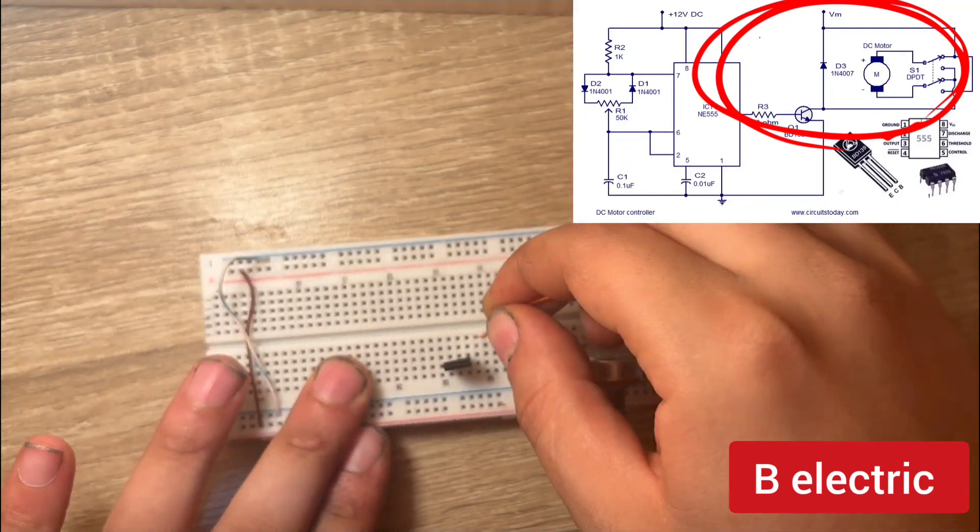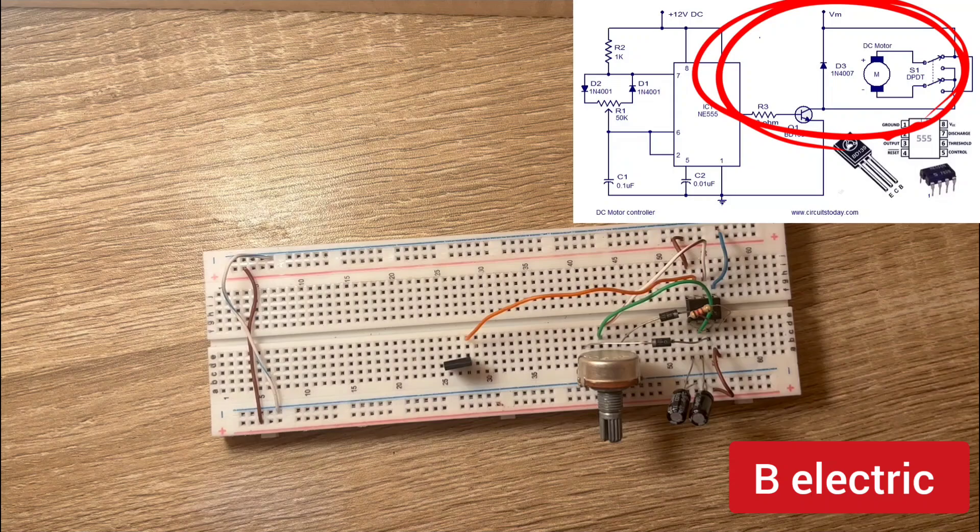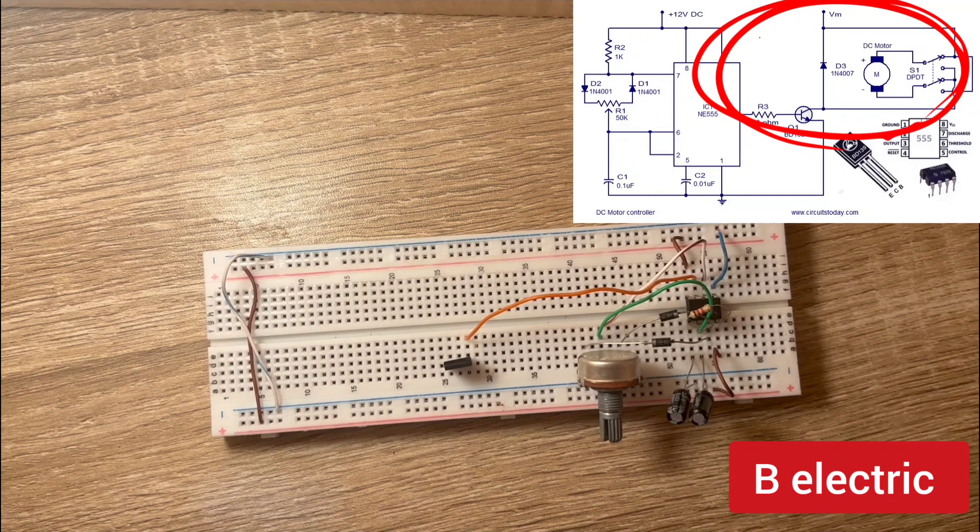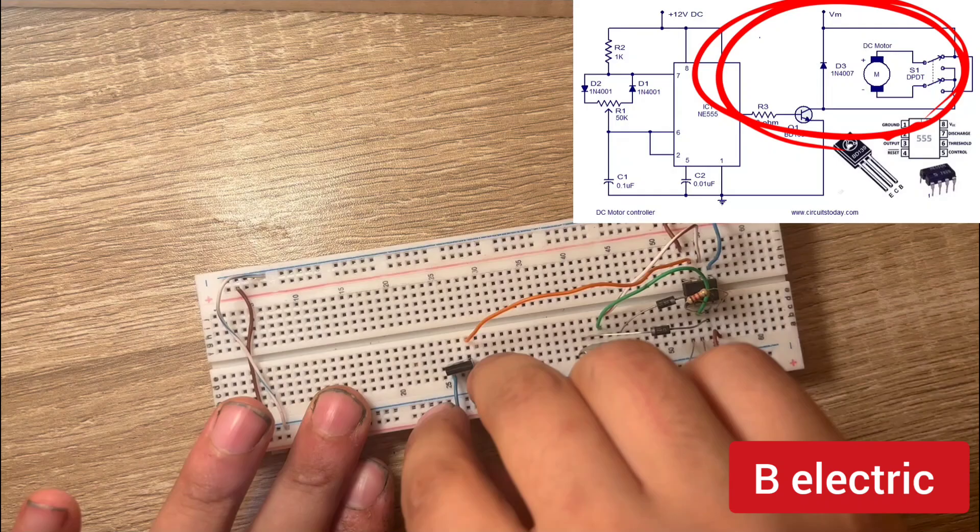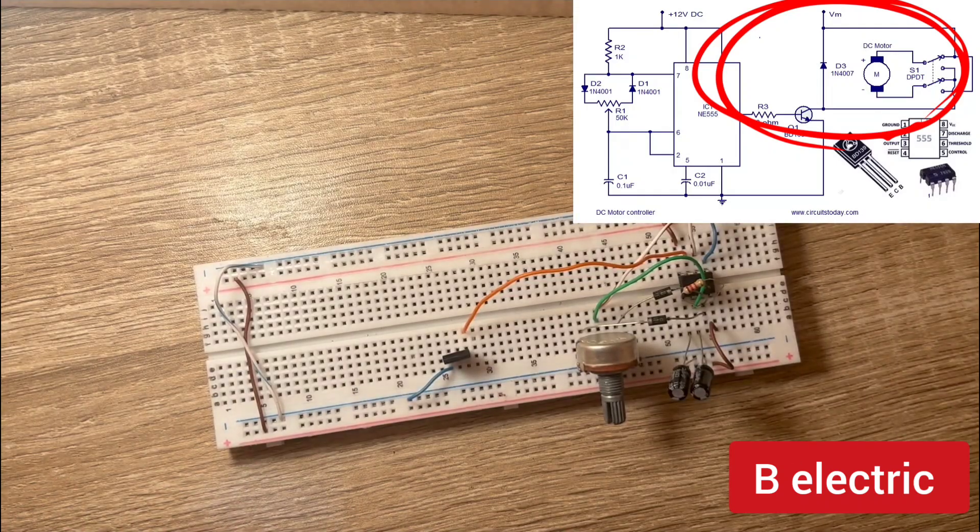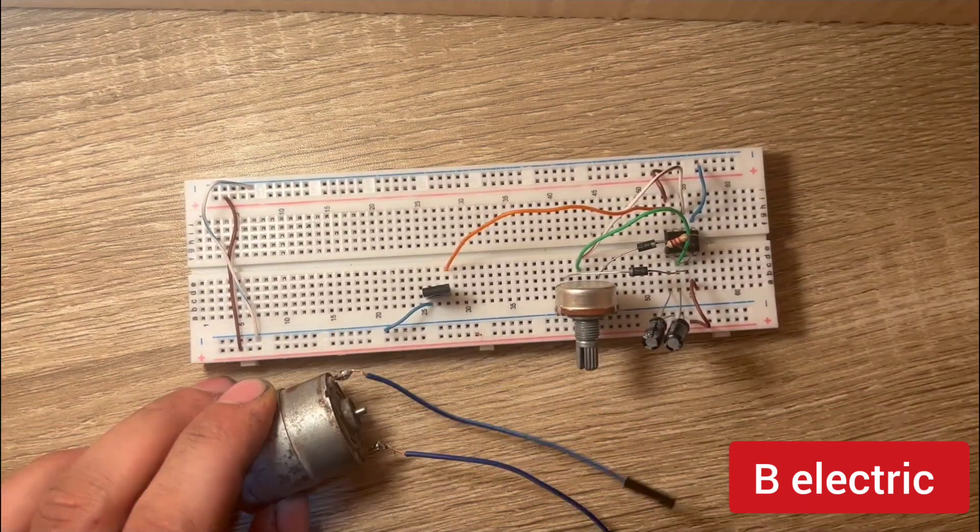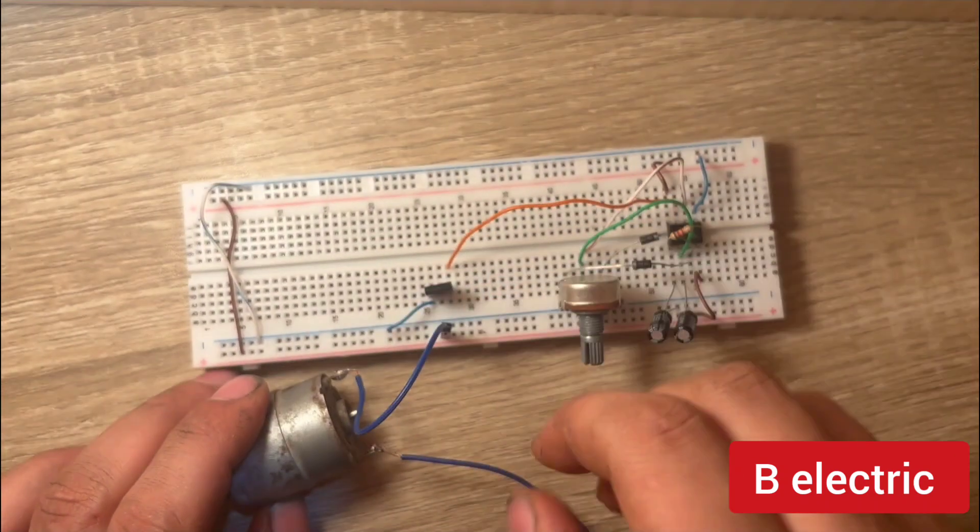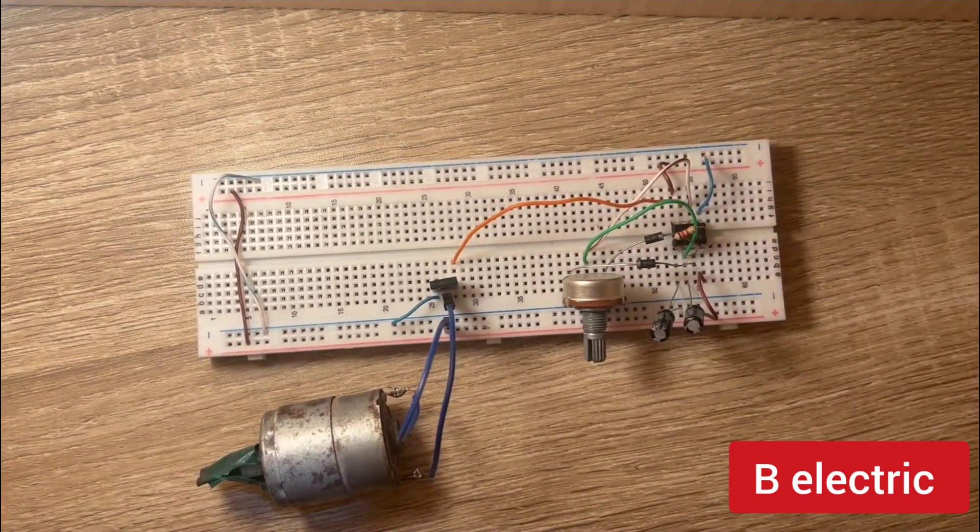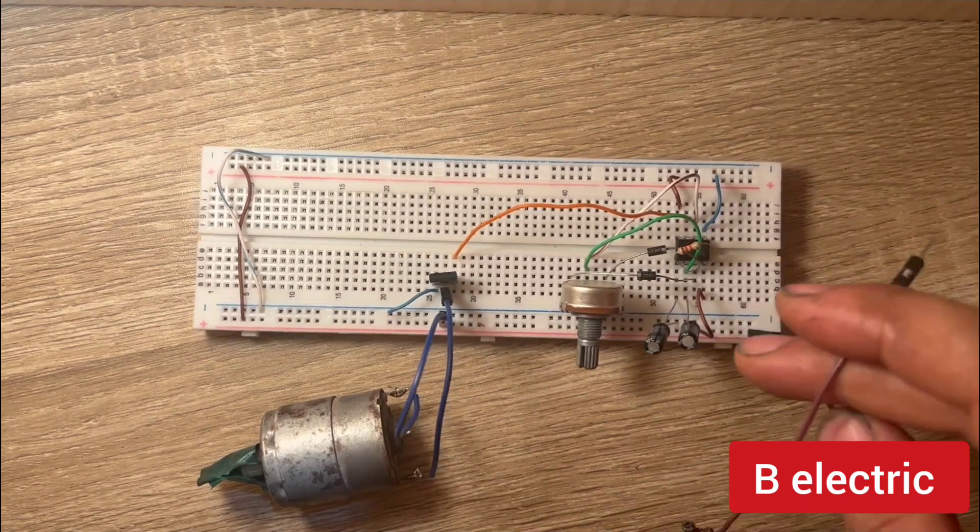Base pin 3 to output pulses. Emitter pin 1 to ground. Collector pin 2 to motor terminal. The other terminal of motor will be connected to positive voltage.